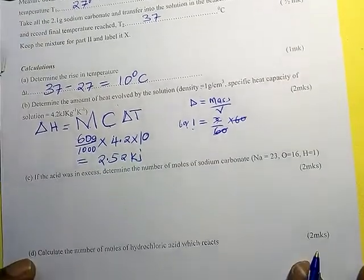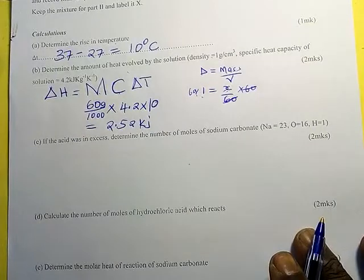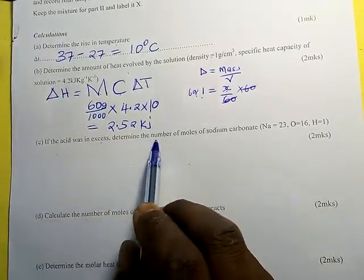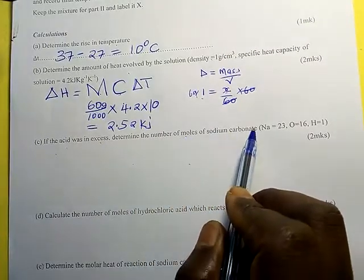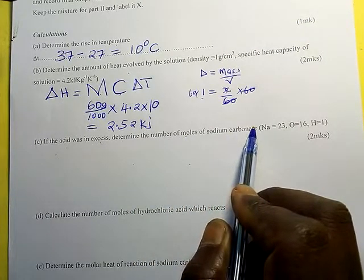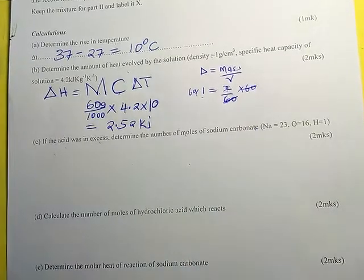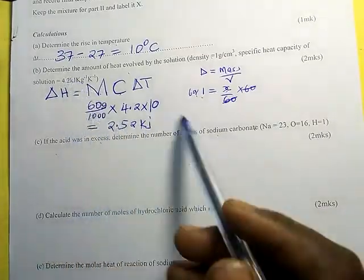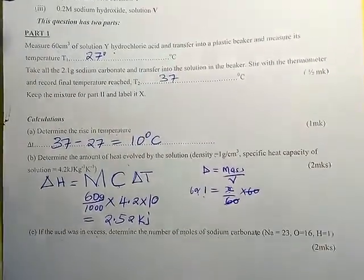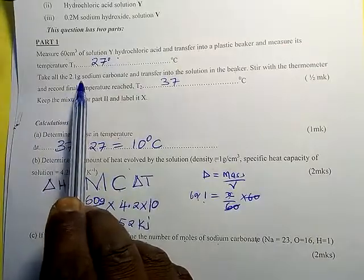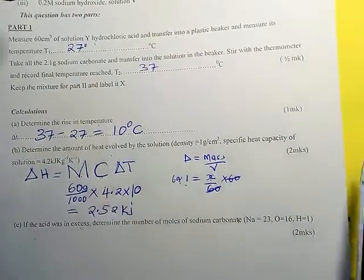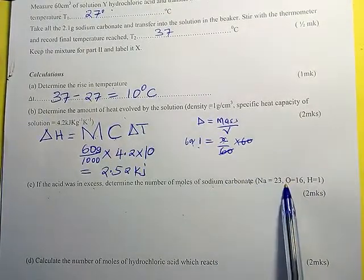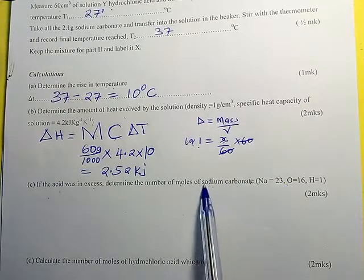Since the acid was in excess, we now determine the number of moles of sodium carbonate. We have the mass of sodium carbonate which was 2.1 grams. Having been given the RAM of each element, we can calculate the RFM of sodium carbonate.